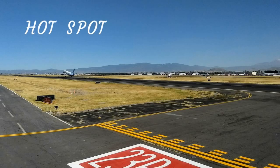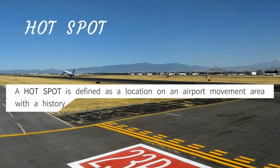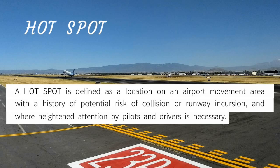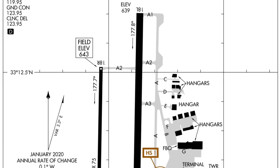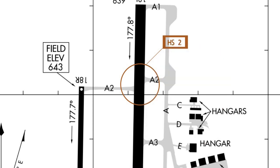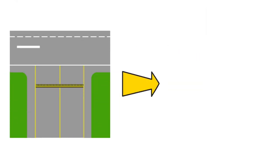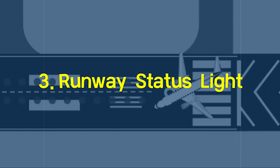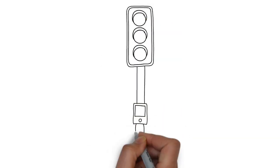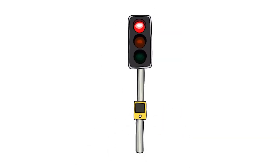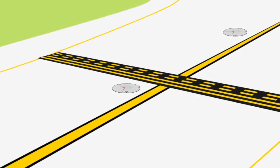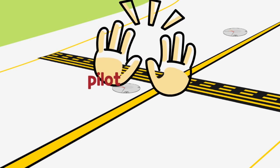A hotspot is defined as a location on an airport movement area with a history of potential risk of collision or runway incursion and where heightened attention by pilots and drivers is necessary. When a hotspot is included in the airport's chart, the pilot and controller both can be more alert. In addition, there is a need to improve marking and signs that can cause confusion for pilots. The third way is to use the runway status light. This system is one kind of traffic light installed in the runway and taxiway, but not a standing traffic light, but the lamp buried under the surface.